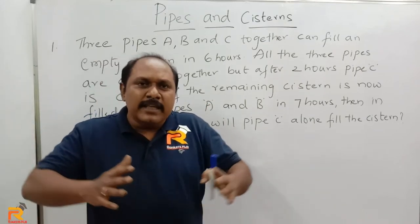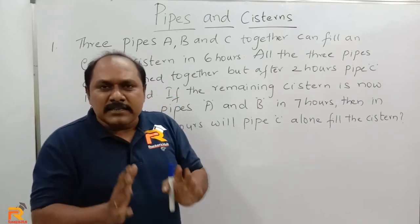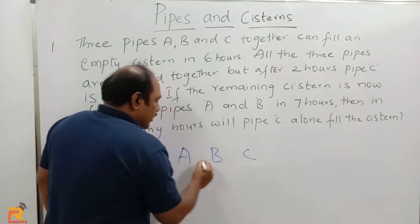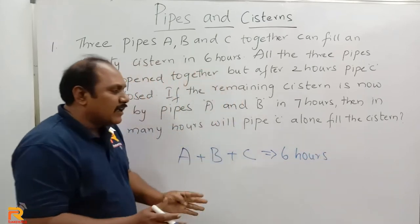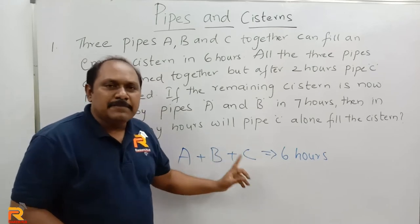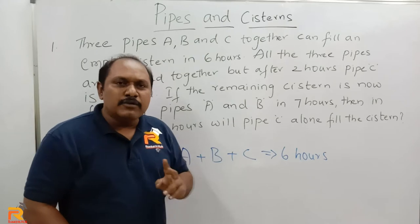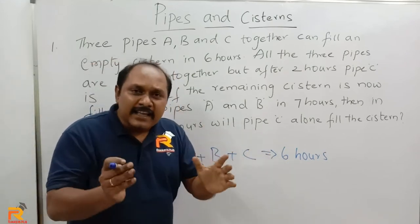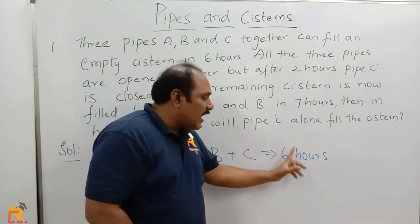Just by looking at this question, it seems very lengthy. But if you can analyze, it's a two-step answer. Now, three pipes A, B and C together can fill an empty tank in six hours. A common mistake students make is thinking A should open for two hours, B for two hours, and C for two hours. That is completely wrong. A, B and C together fill the tank in six hours, so A, B and C each should be open for six hours.